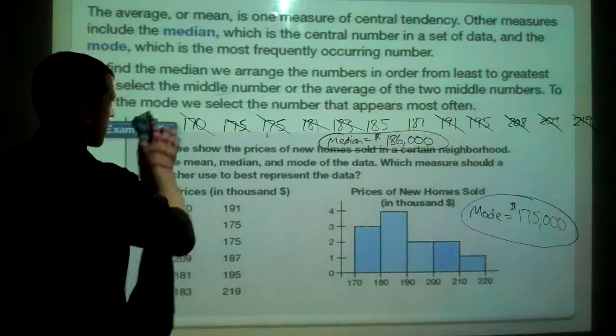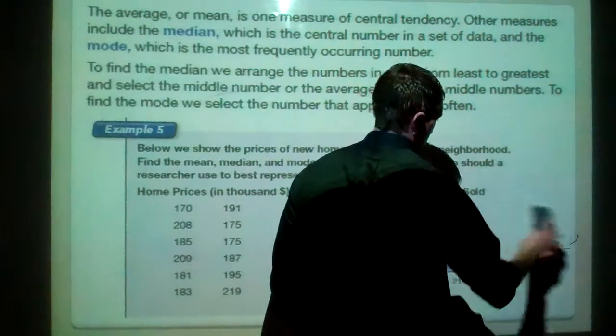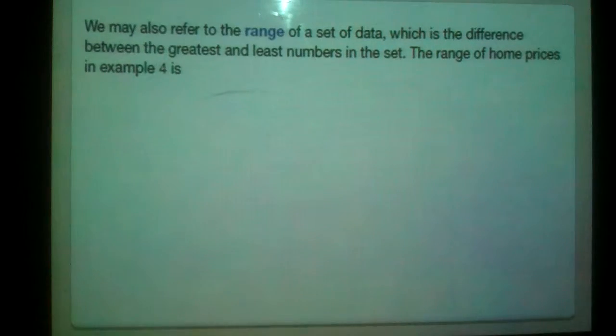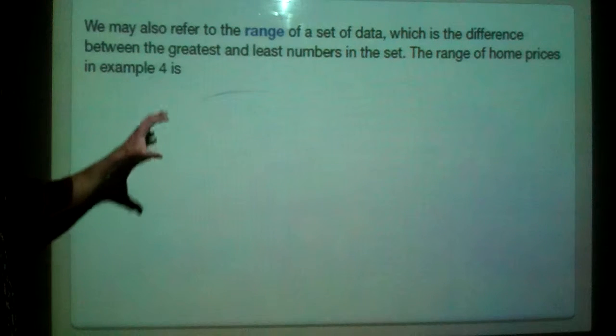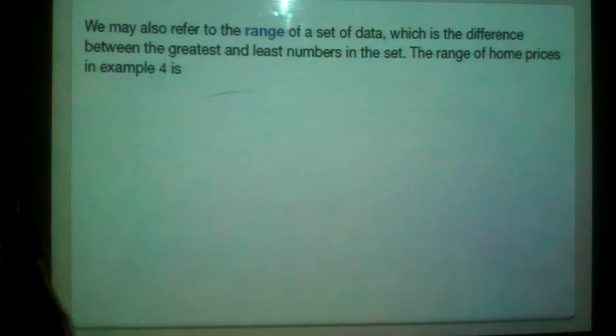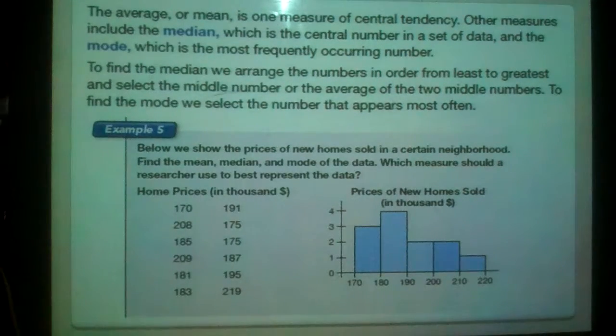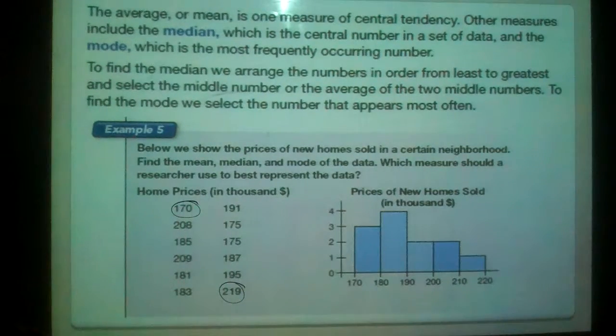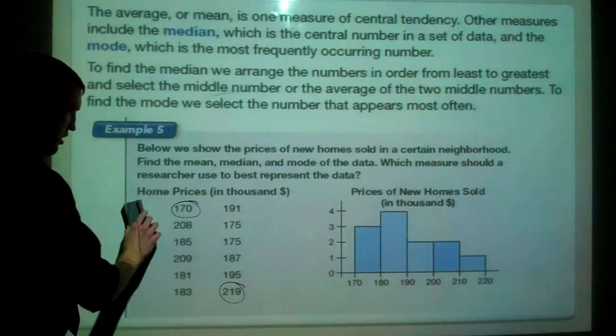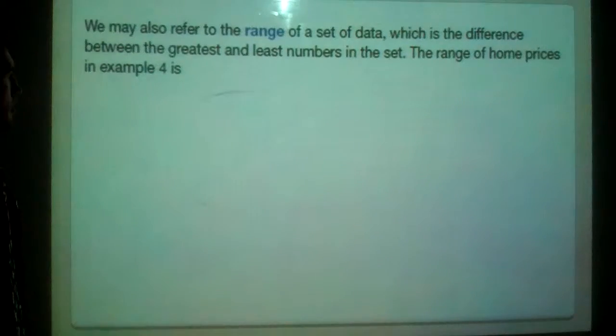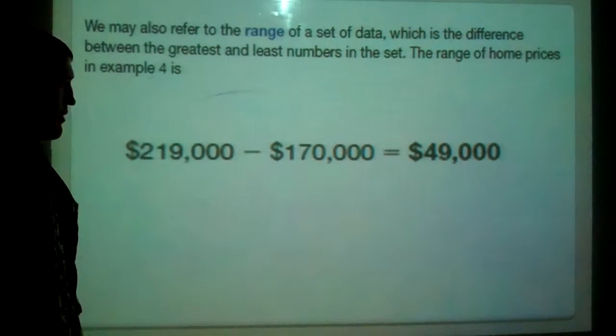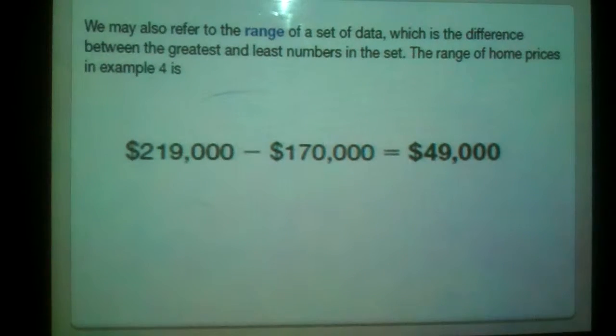One last thing here. We also can use the range to help us determine some things. The range of a set of data is the difference between the greatest and the least numbers in the set. So if we turn back here, our largest number was 219 and our lowest was 170. So if we go back to our range here, we will subtract those two and we should get our range. That would look like this. 219 minus 170, subtract those, $49,000. So that would be the range of our data.